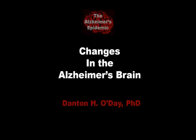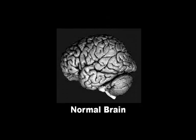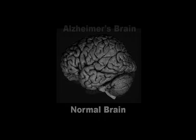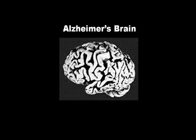Changes in the Alzheimer's Brain. Due to the accumulation of plaques and tangles that affect nerve cell function and viability, the normal brain undergoes many changes. After autopsy, these can be seen in whole brains as a decrease in the size and the appearance of deep sulci between the folds in the brain.